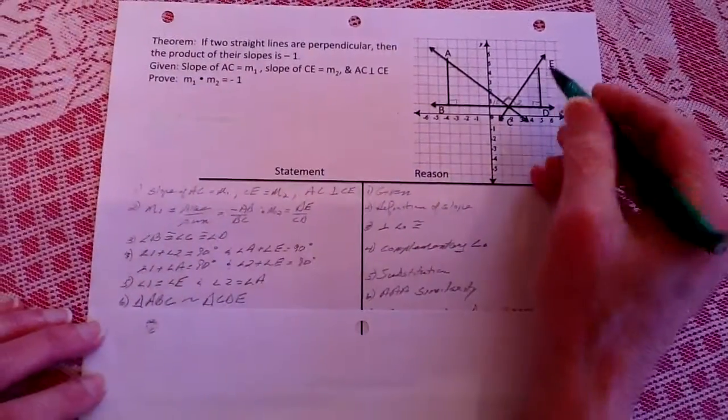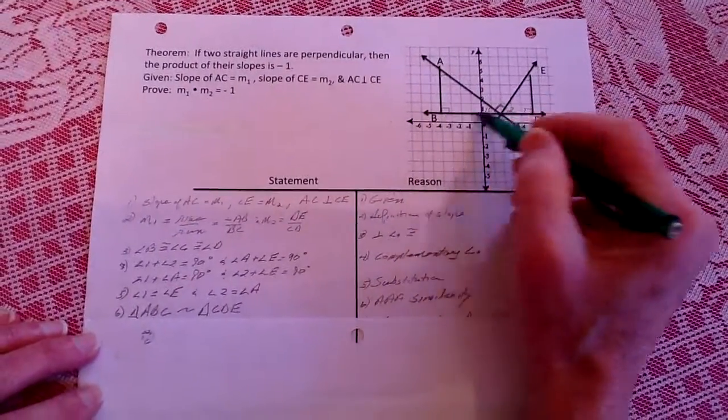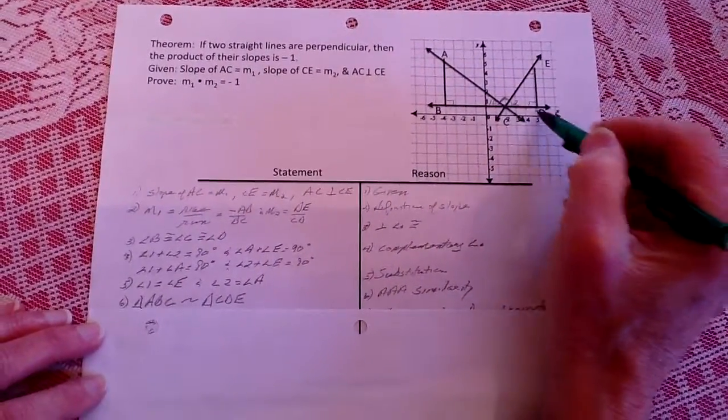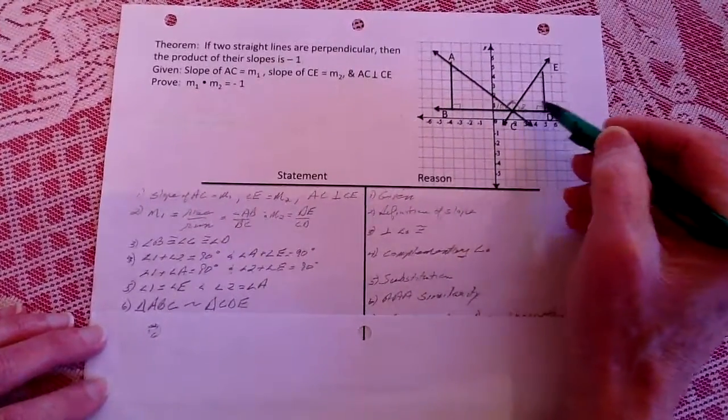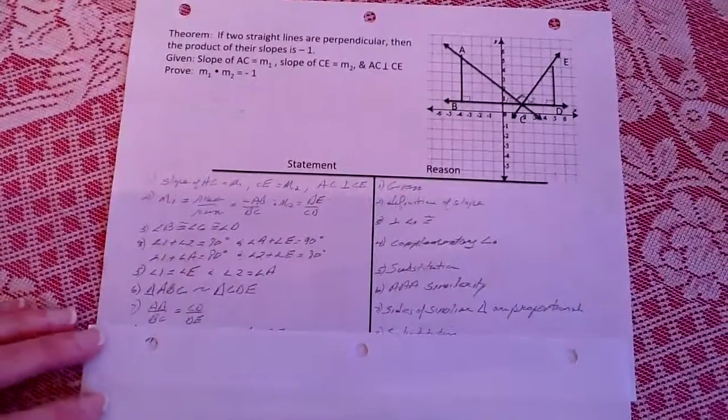From that, we know now that these triangles ABC and CDE are similar because of angle angle angle, and we just showed those all three of those angles.